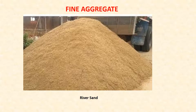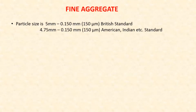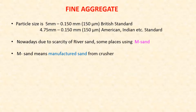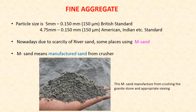Fine aggregate — river sand is considered a good fine aggregate. The particle size of fine aggregate ranges from 5 mm to 0.150 mm (150 micrometers) in British standard, and from 4.75 mm to 0.150 mm in American or Indian standard. Nowadays, due to the scarcity of river sand, some places use M-Sand — manufactured sand from a crusher — produced by crushing granite stone.